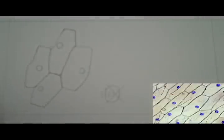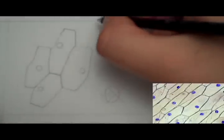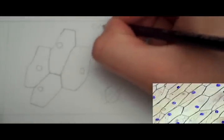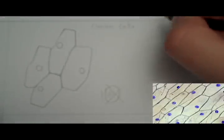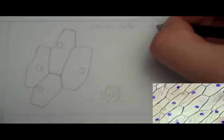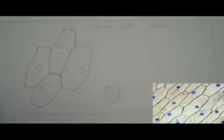So lastly, it's also very important that we include a title. So I'm going to put onion cells. And normally we would include the magnification. So this is at a hundred times. The title needs to be underlined.